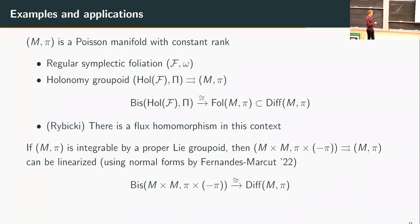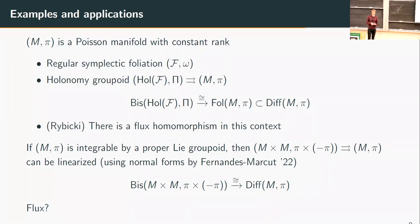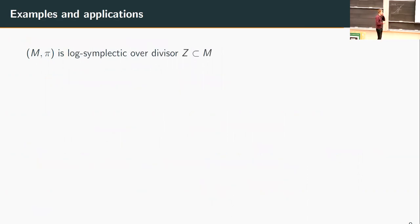In the case where M comma pi has constant rank and is integrable by a proper groupoid, we can actually do the linearization already on the pair groupoid using normal form theorems by Fernandez and Marcut. Then we get a direct identification of the coisotropic bisections of the pair groupoid with the Poisson diffeomorphism group. I have no idea of a flux homomorphism in this context — the hard part is that the relevant cohomology, namely the first Poisson cohomology, is non-abelian and can be infinite dimensional, which makes integration hard.